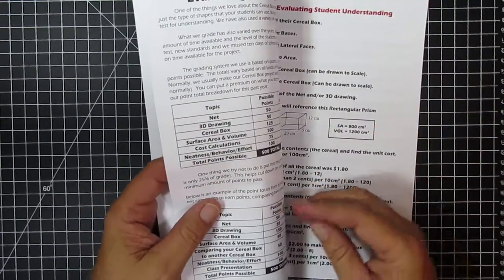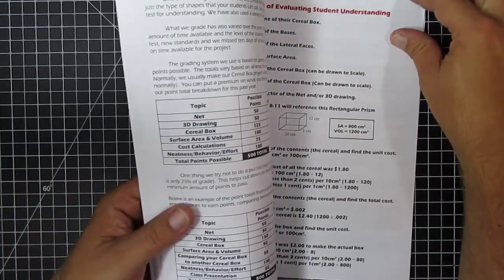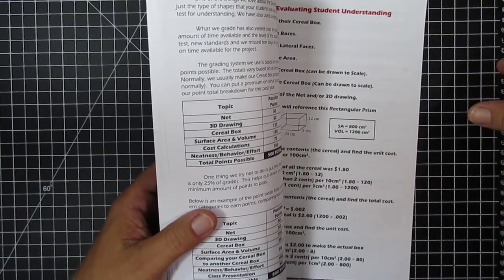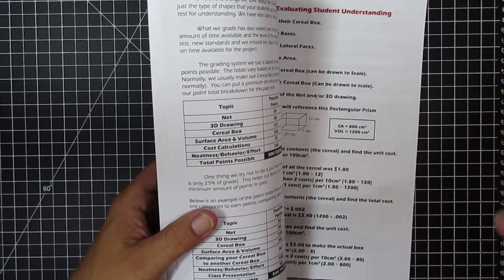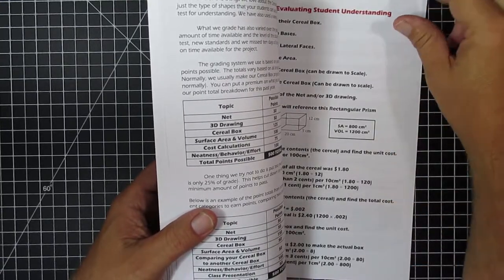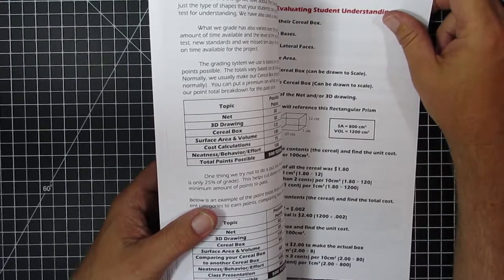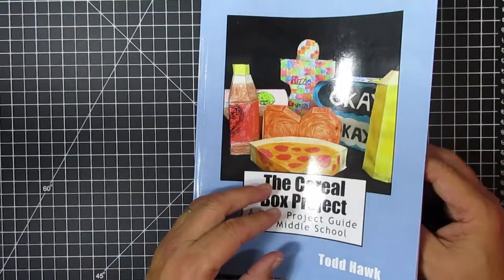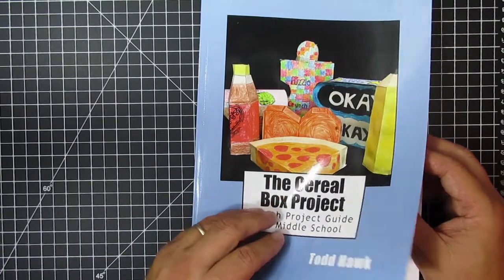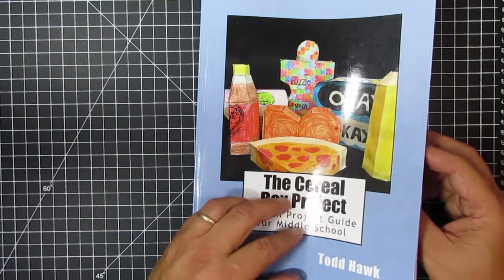After that, we talk in here a little bit about how are you going to grade this. And we show you some of the different ways that we grade students on this project. And it changes from year to year. It depends on what we're emphasizing, what we're looking at. And so it's a never-ending thing, but we share what we try to do.